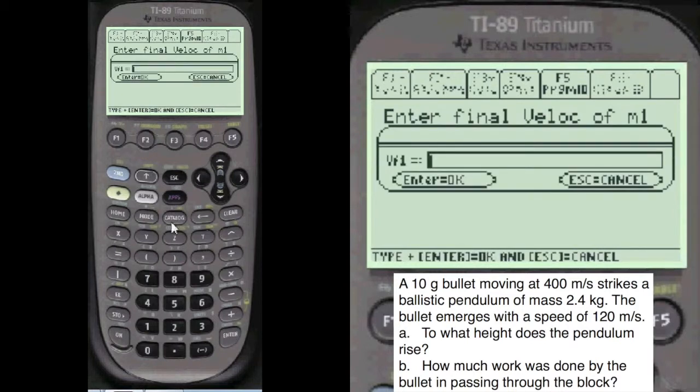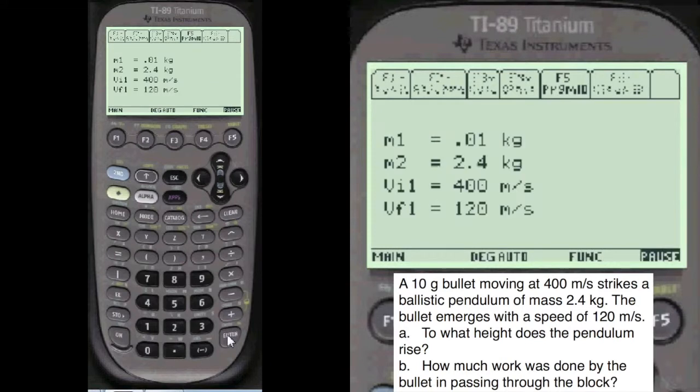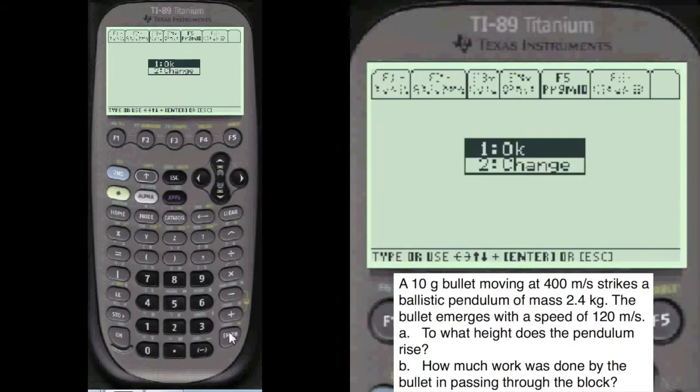The final velocity is alpha 120 meters per second in the positive direction. And we'll show you what you've entered. You can change it in case you've made a mistake. Say it's okay.